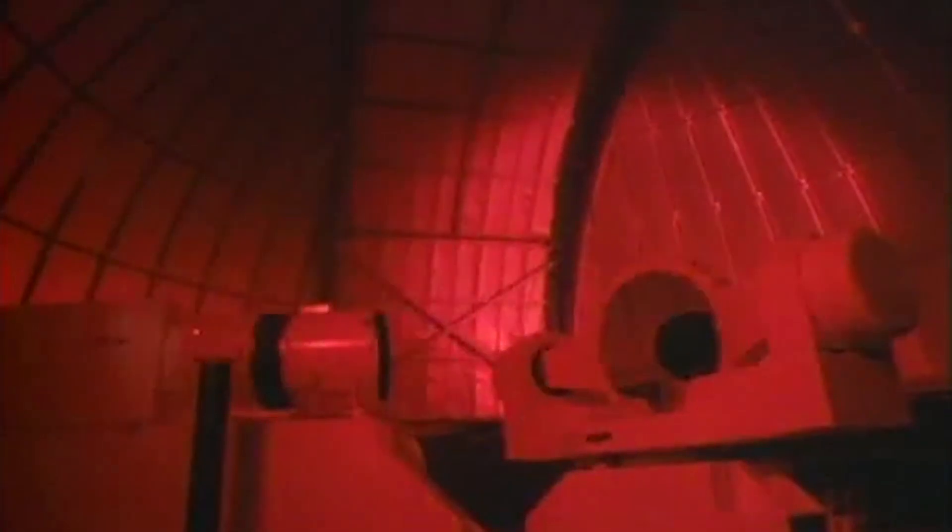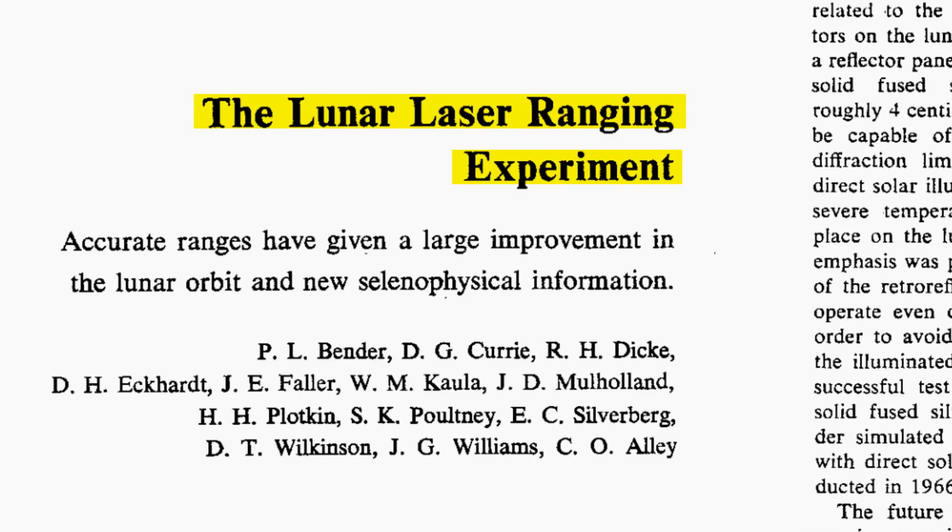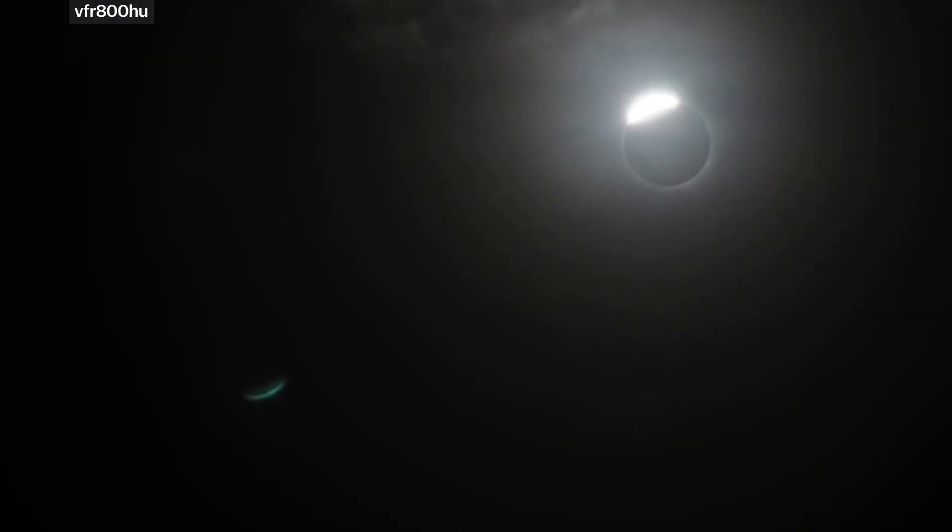Astronomers bounced lasers off those mirrors to measure the moon's distance. And that's how they found out that the moon is moving away from Earth by more than three centimeters per year. So in a billion years or so, whatever creatures live here will witness Earth's very last total solar eclipse.